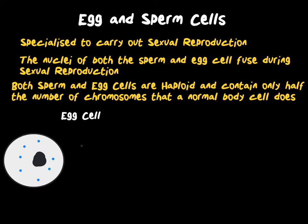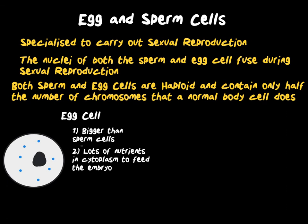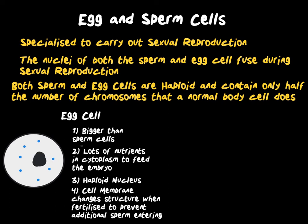This is important because it means when they fuse, we end up back at a diploid cell with 46 chromosomes. Egg cells are much bigger than sperm cells, because they contain nutrients in the cytoplasm in order to feed the developing embryo. The egg cell has a haploid nucleus and has a specially adapted cell membrane. Straight after fertilisation, the membrane changes its structure to prevent any more sperm from getting in, ensuring that it is only fertilised once.